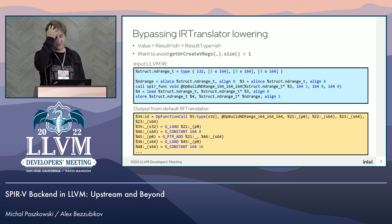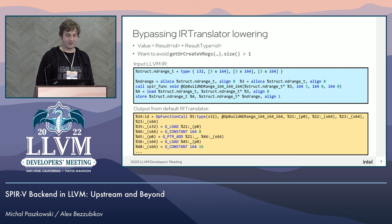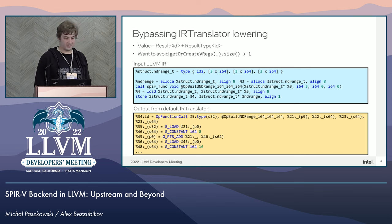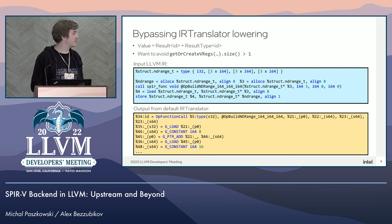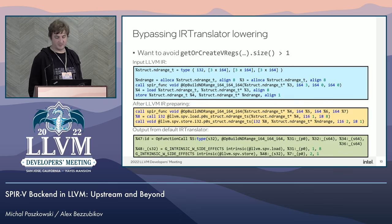In SPIR-V, each value is effectively described by an unsigned integer ID and a result type, which is an operand of the instruction that produces that value. That result type itself is an ID produced by a type declaration instruction. That's why in our backend we needed to avoid get-or-create virtual registers returning more than one virtual register. This is essentially an example of an aggregate load which after ISEL translation is split into multiple loads — and we didn't want to see that with our backend, as it loses critical information for SPIR-V.